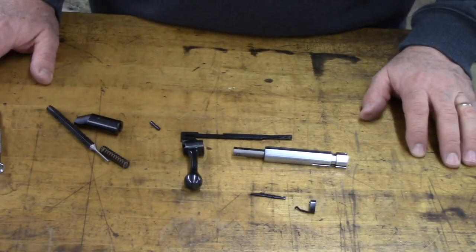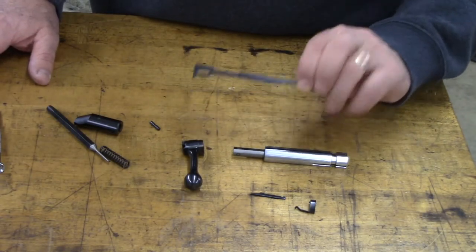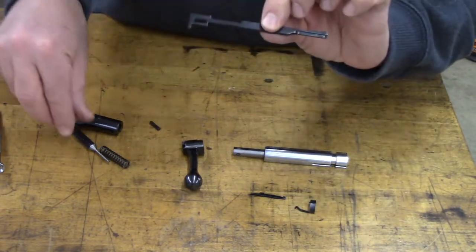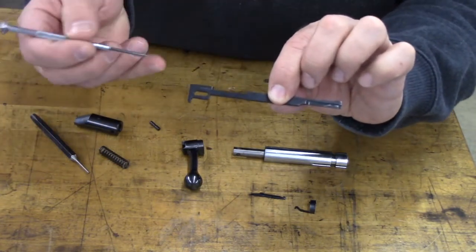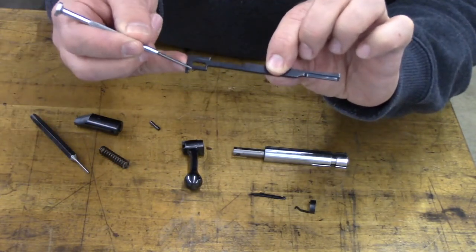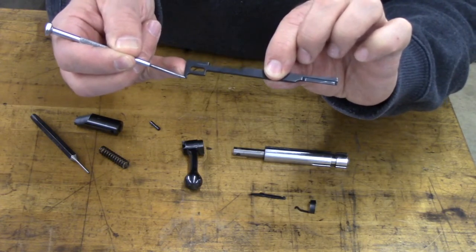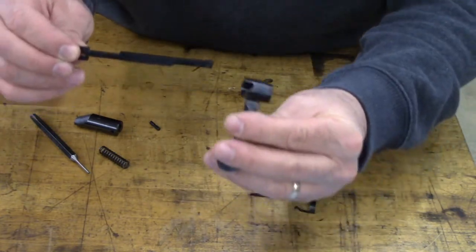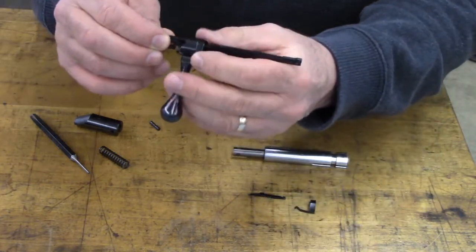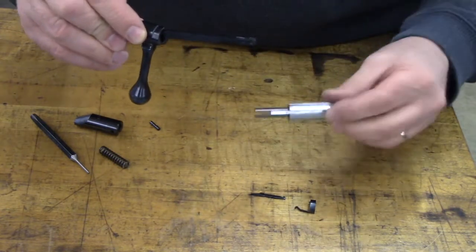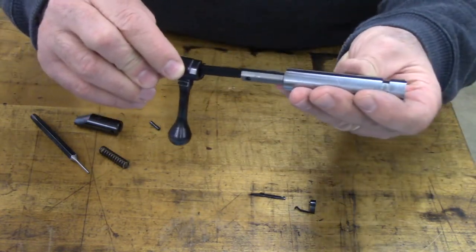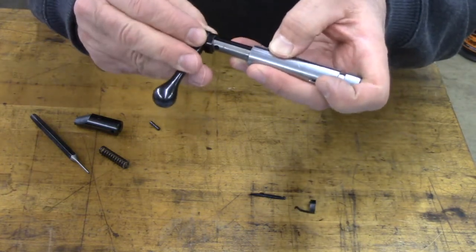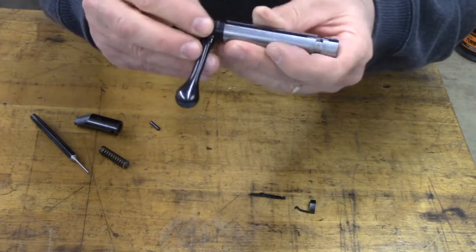All right, let's reassemble this bolt. The first thing that we need to do is we're going to take the firing pin. Keep in mind that this little tail on the back of the firing pin, that is the bottom. We're going to slide this back through our bolt handle, like so. And now, we're going to put these two into the slot of the bolt body.